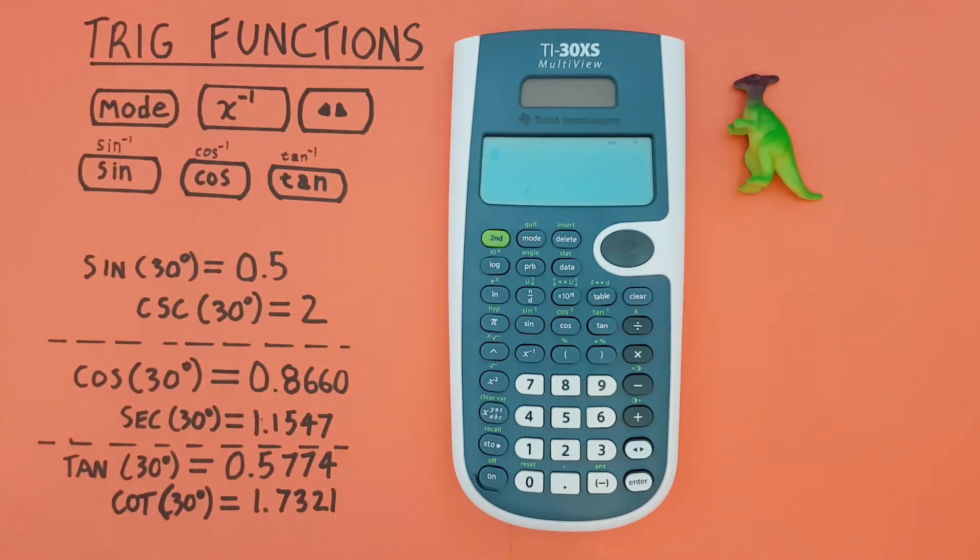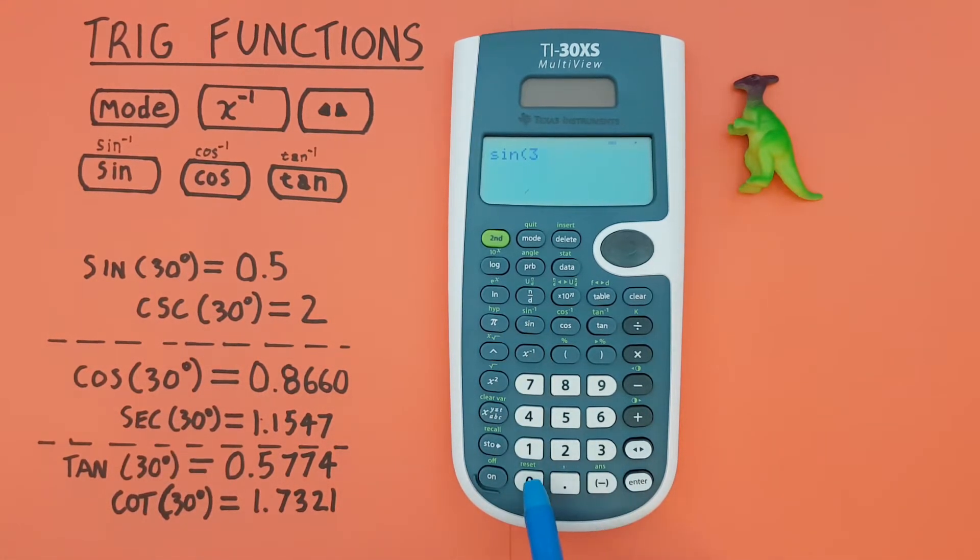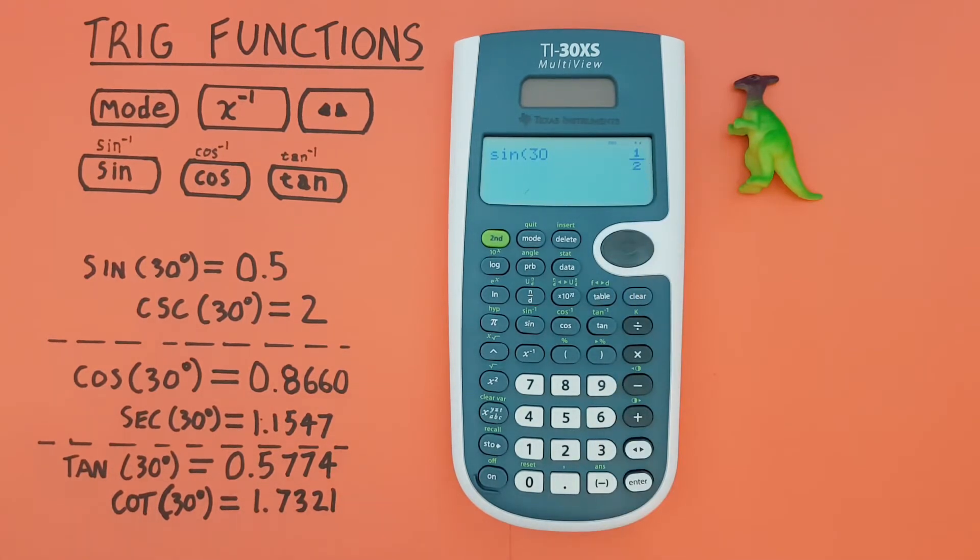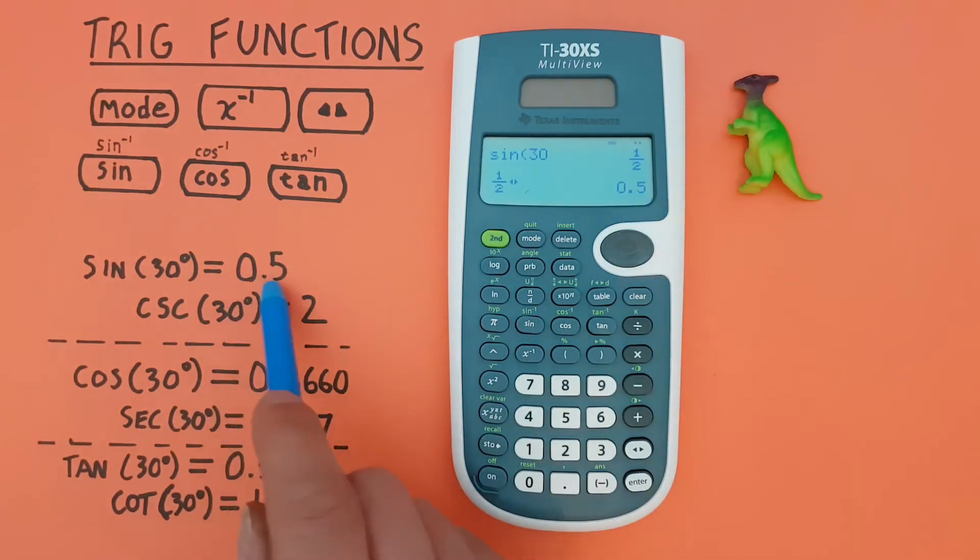To start, if we want to find sine of 30 degrees, you start with sine, enter the 30, and press enter. Now, this calculator likes to give us fractions rather than decimals. So, we have 1 over 2, or a half, and we can convert that to a decimal if we want with the toggle key. There we go, we get 0.5, which is correct.